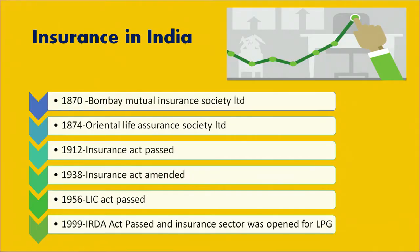Let us look at the history of insurance in India and how it evolved. In 1870, the Bombay Mutual Insurance Society Limited was formed, and in 1874 the Oriental Life Assurance Society Limited came into existence. In 1912, the Insurance Act was passed, laying down rules and regulations for various insurance businesses operating in the country. In 1938, this Insurance Act was amended with a lot of modifications — things like what premiums to charge, where premium funds would be allocated, and modes and procedures for recruitment of agents and their commissions.